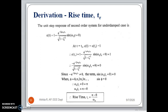Substituting T equal to Tr, the output response C(Tr) is going to be 1. So substituting C(Tr) = 1, after cancellation you get the exponential term e raised to minus zeta omega n Tr equal to 0 is not possible. So sine of (omega_D * Tr + theta) must equal 0, which means omega_D * Tr + theta = n*pi. Taking n = 1, omega_D * Tr = pi minus theta. So rise time Tr = (pi minus theta) / omega_D, where omega_D = omega_n * sqrt(1 - zeta squared).